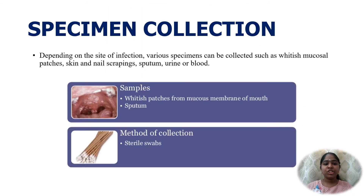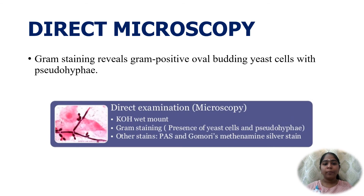For laboratory diagnosis, specimen collection depends on the site of infection. Various specimens collected include whitish mucosal patches, skin and nail scrapings, sputum, urine, or blood. On direct microscopy, Gram staining reveals Gram-positive oval budding yeast cells, 4 to 6 micrometers in size, with pseudohyphae.